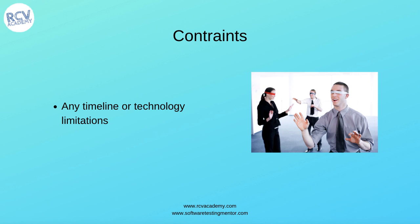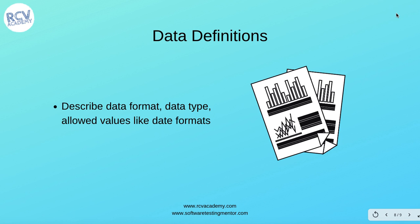The next thing is constraints — any timeline or technology limitations. For example, if you are using a technology that has certain limitations and is not compatible with certain platforms or other applications, those constraints need to be mentioned in the acceptance criteria. Any timeline constraints also need to be mentioned in the acceptance criteria.